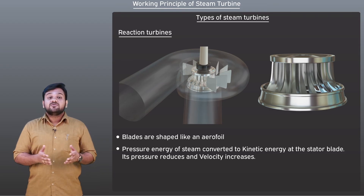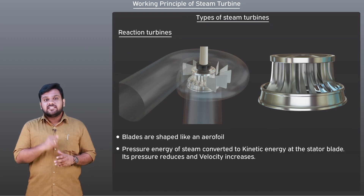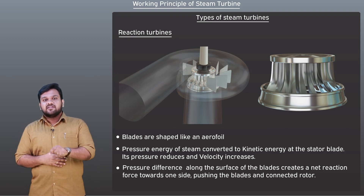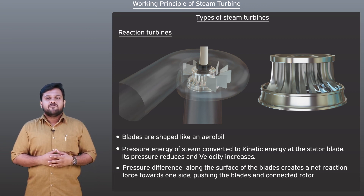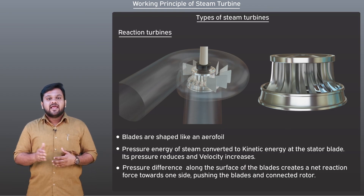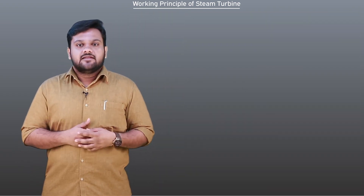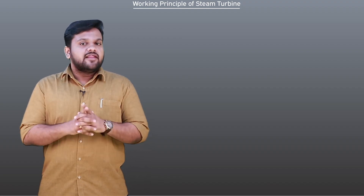When the steam flows along the moving blades, because of the aerofoil shape, it loses both velocity and pressure, and a pressure difference is created along the surface of the blade. This pressure difference creates a net reaction force towards one side, pushing the blade and hence the connected rotor. Both types of turbines are finally connected to a generator via a gearbox fixed on the central rotor, and the generator produces the required amount of electricity.